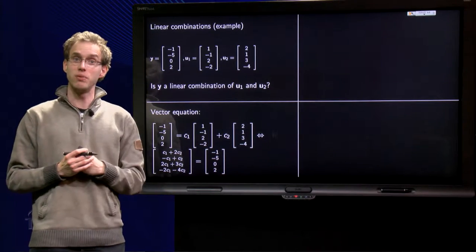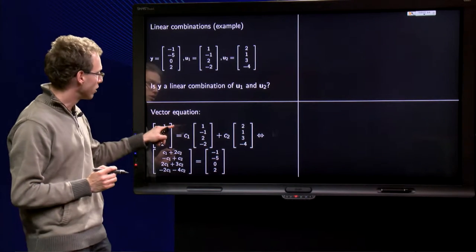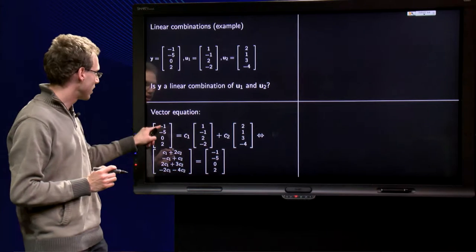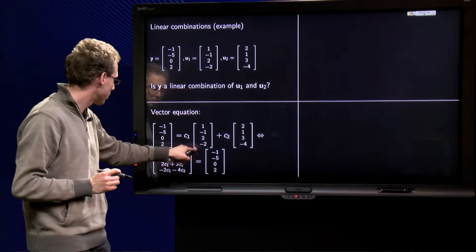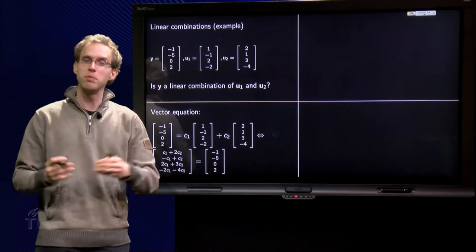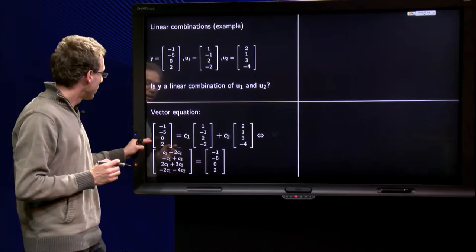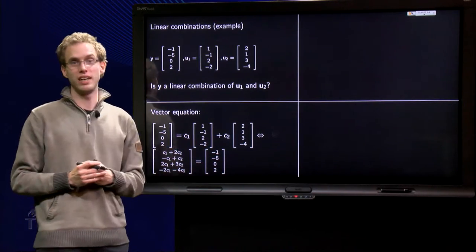How can we find c1 and c2? Well, let us make one vector from the right hand side. So as a first component you get c1 plus 2 times c2 over here, second component minus c1 plus 1 times c2 equals minus 5, and similarly for the other two components. Now, those two vectors are only equal if all components of the vectors are equal.